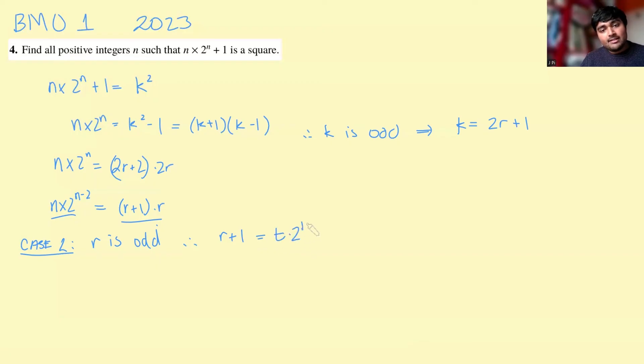So it's going to equal t times 2 to the n minus 2, where t is some positive integer. Okay, cool. And we're just going to substitute this in again. So we get n times 2 to the n minus 2 times r plus 1, or equals r plus 1. So t times 2 to the n minus 2 times r. So t 2 to the n minus 2 minus 1. Like so, very, very similar to before. Canceling the 2 to the n minus 2s, we get n is t, and then t lots of 2 to the n minus 2 minus 1.